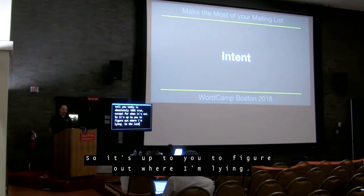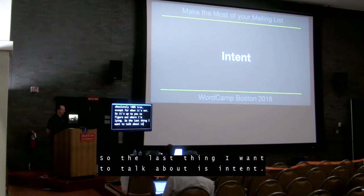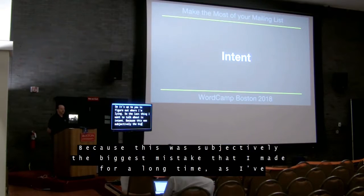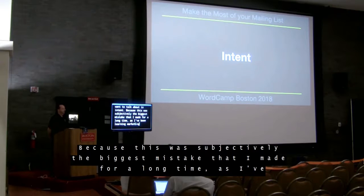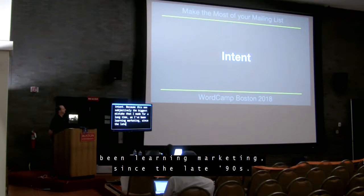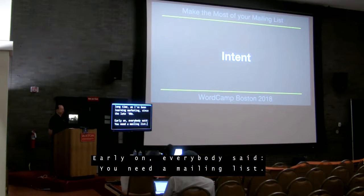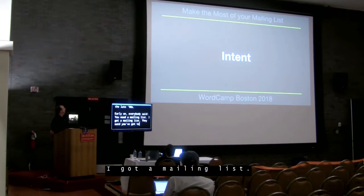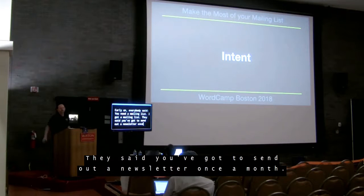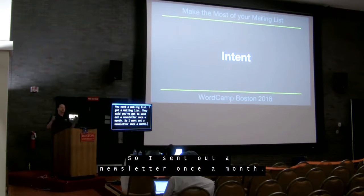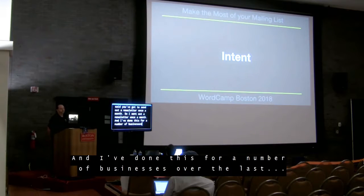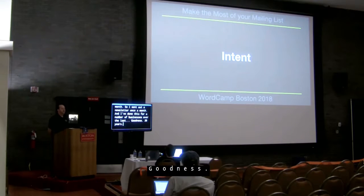The last thing I want to talk about is intent. This was, subjectively, the biggest mistake that I made for a long time. As I've been learning email marketing since the late 90s, early on everybody said you need a mailing list, so I got a mailing list, and they said you've got to send out a newsletter once a month, so I sent out a newsletter once a month. I've done this for a number of businesses over the last 20 years.